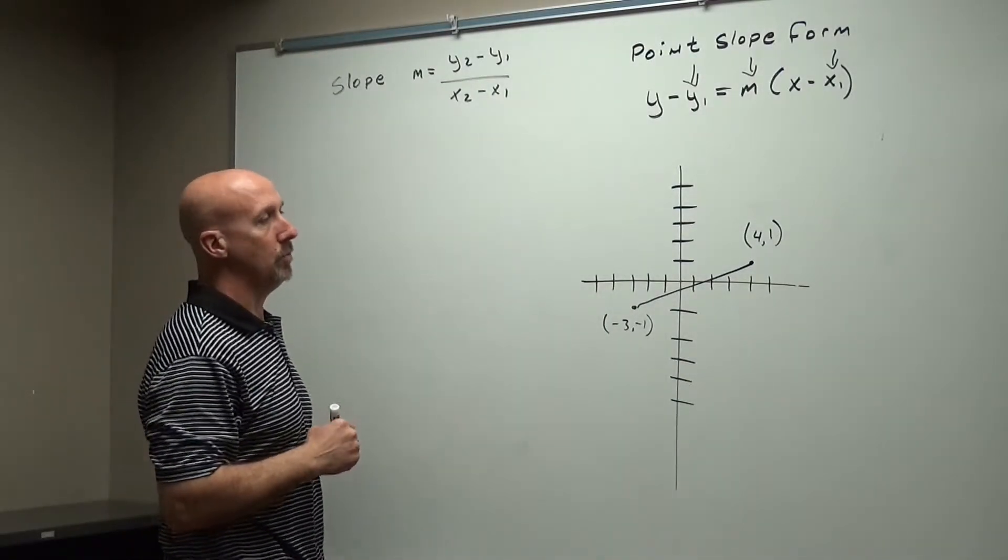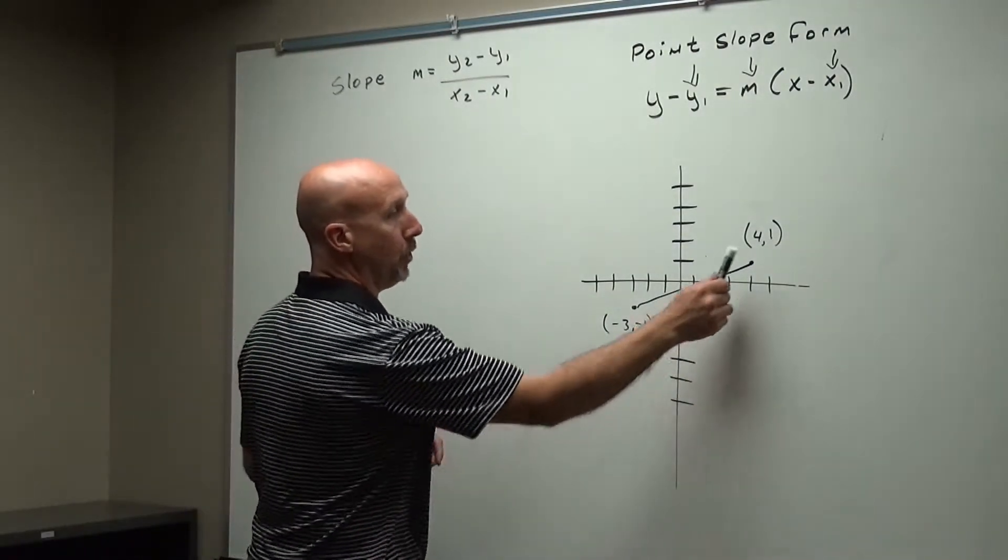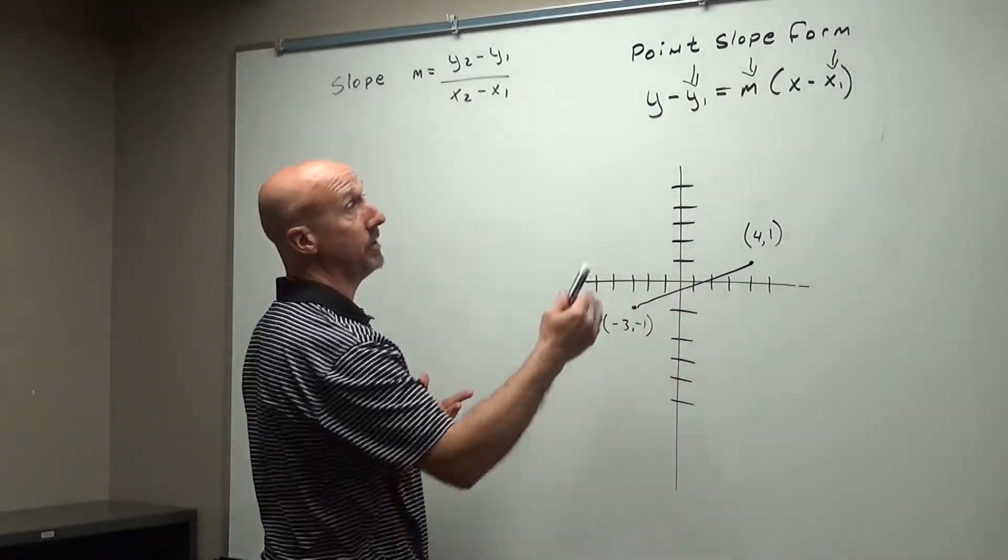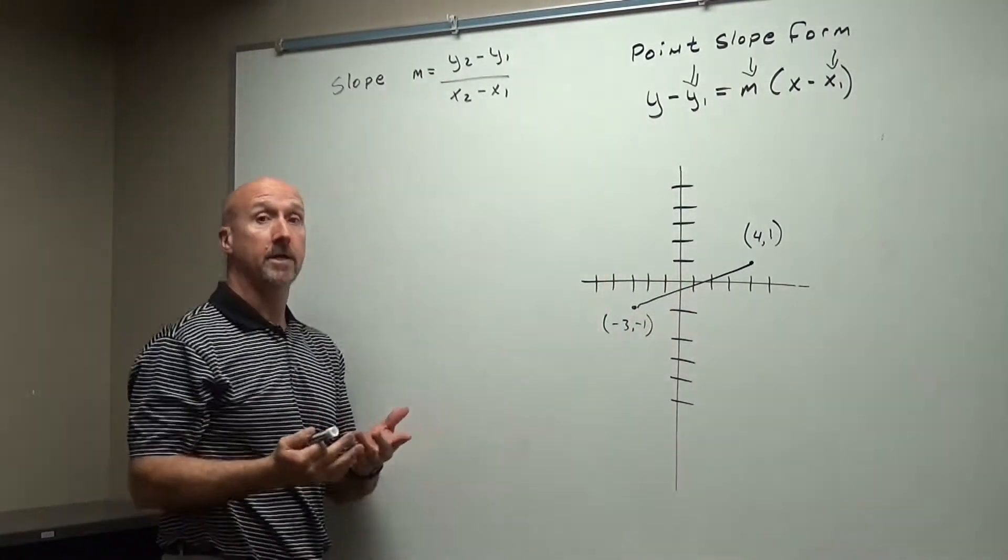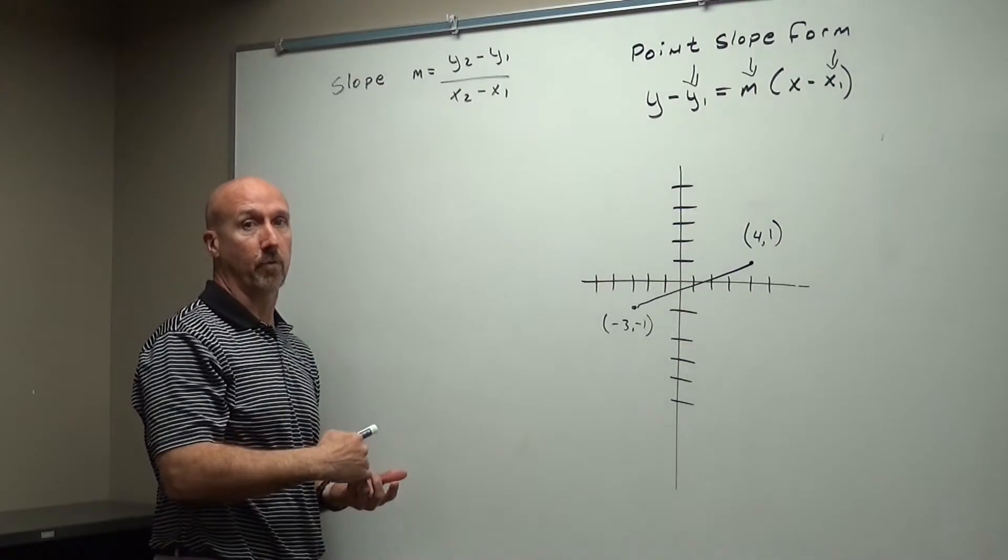Alright, on our last video we found two points. They were given two points, and we found point-slope form, then we changed it to slope-intercept form.